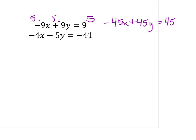Now in the second equation, in order to get a common coefficient of y which is 45, I would need to multiply that 5 by 9. So I'm also going to multiply all the other terms by 9 as well. This gives me a new equation.